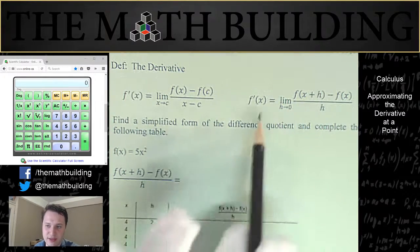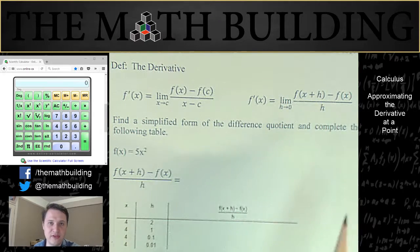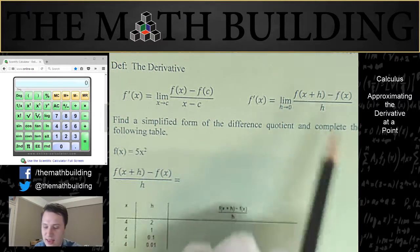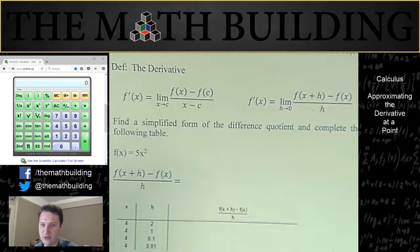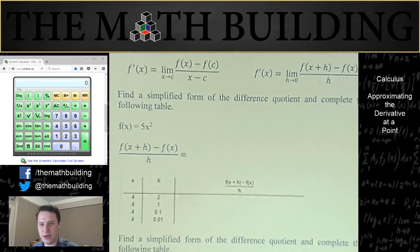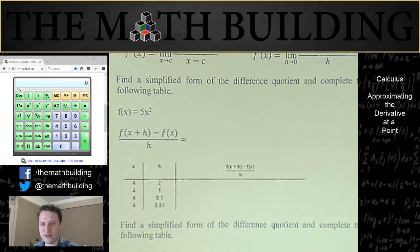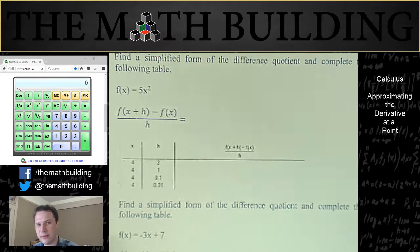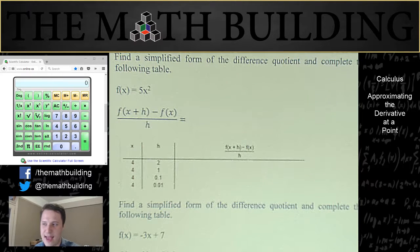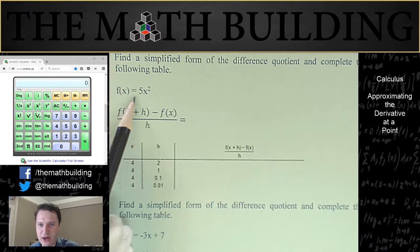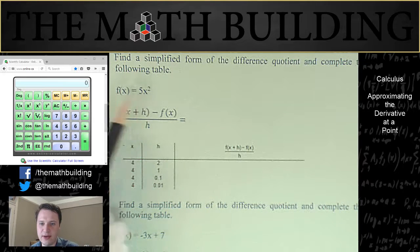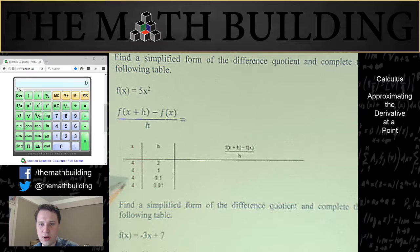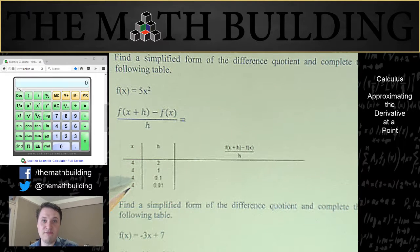I think most scholars agree that this definition over here is easier to simplify and easier to work with, and so this is the one we're mainly going to be using. So now let's do two application problems of this. We're going to do two approximations of the derivative, and so here we go. And this is going to be a little bit of work, about the same amount of work as when we found limits in earlier videos. We have this function f of x equals 5x squared, and you can see by this table that they want us to approximate the derivative at the point x equals 4.